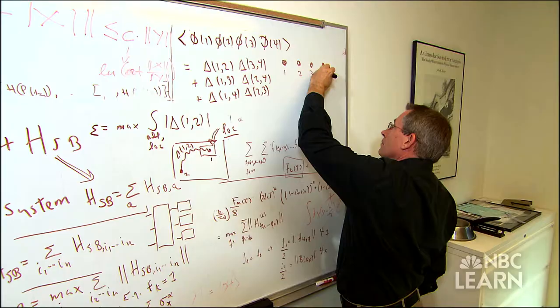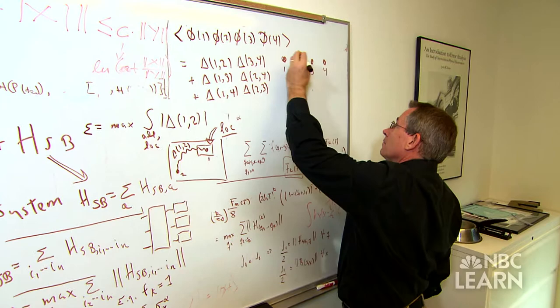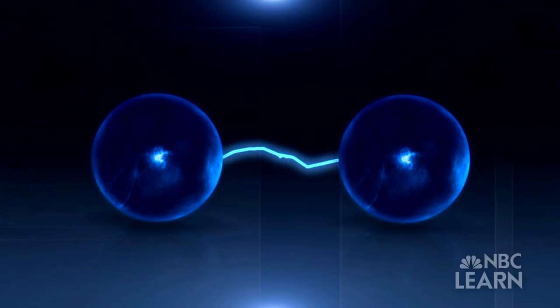A quantum computer is made up of two or more atoms or electrons called quantum bits or qubits. These qubits, like all atomic particles,